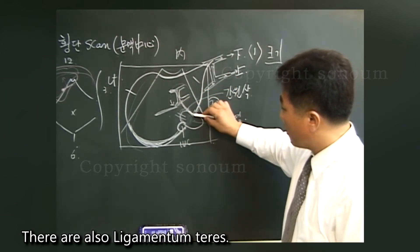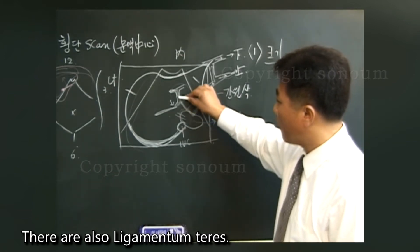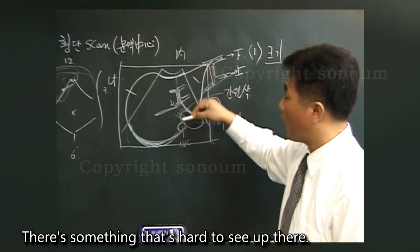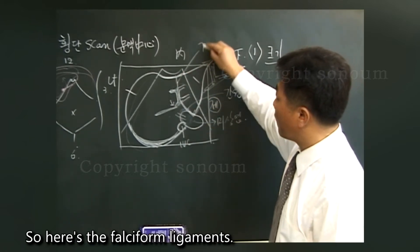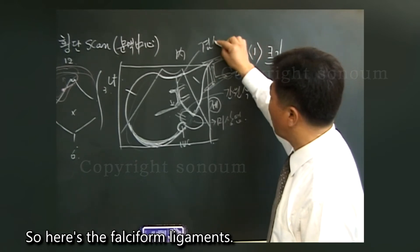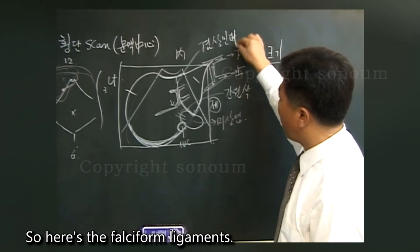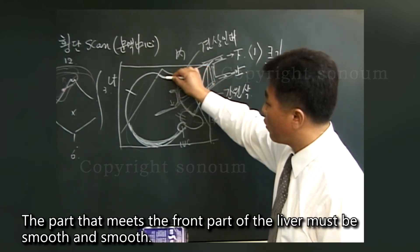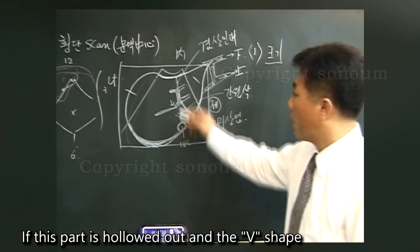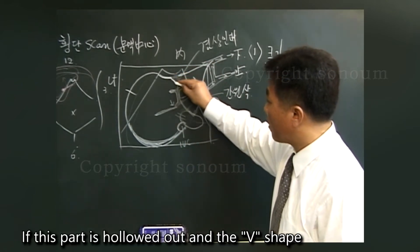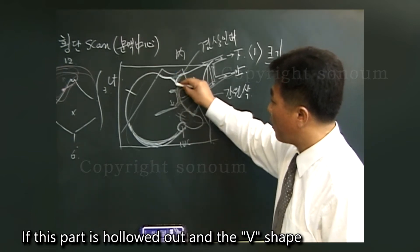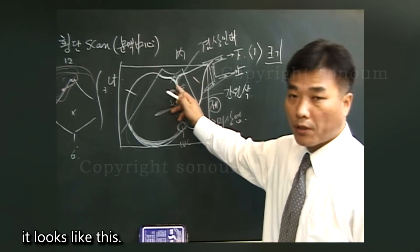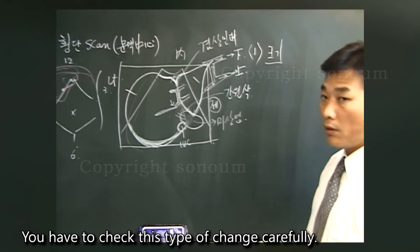There are also ligamentum teres. If you go up, you'll find the umbilical vein. There's something that's hard to see up there. So here's the falciform ligaments. The part that meets the front part of the liver must be smooth. If this part is hollowed out and V-shaped, if the liver left lobe becomes larger, it looks like this. You have to check this type of change carefully.